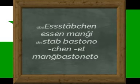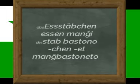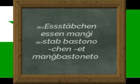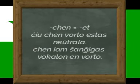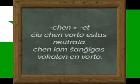Essstäbchen — manbastoneto. From aus, the word vishin — mange. Stäbchen — bastoneto. The hien, this is the et, and shtab — this is the normal word of stäbchen. The shtab, the bastono.